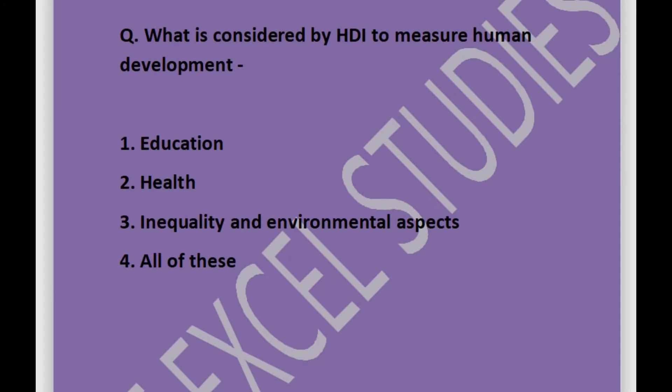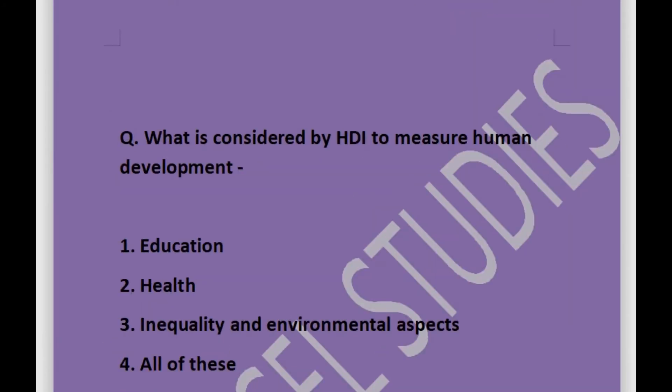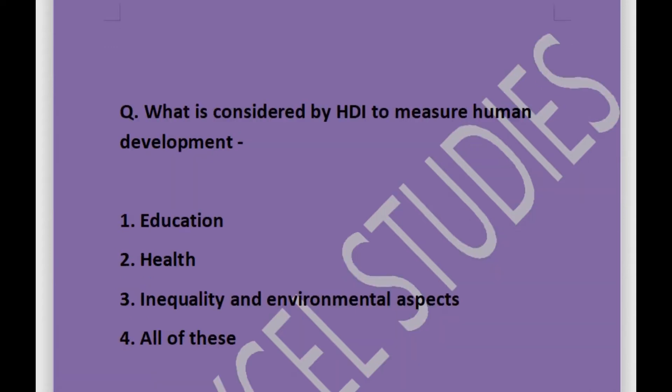Next question: what is considered by HDI to measure human development? Options are education, health, inequality and environmental aspects, or all of these. Answer is all of these. HDI considers health of people, education of people, and inequality and environmental aspects.